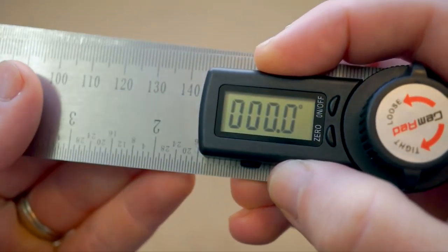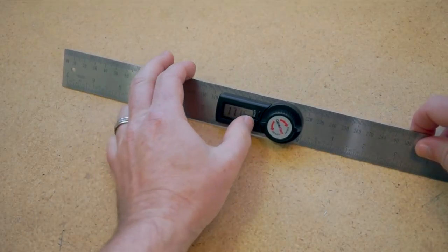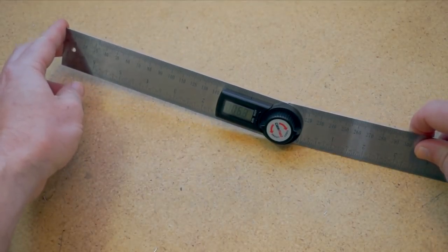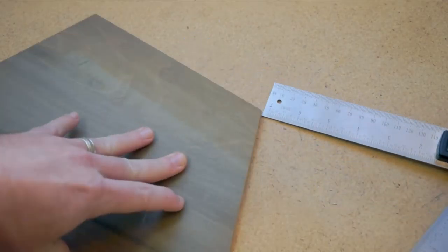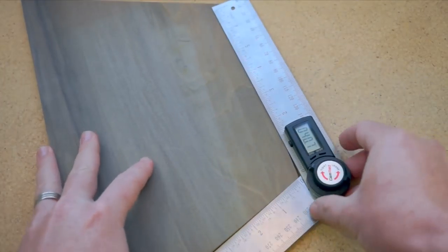It reads in either direction. You can flatten it out and zero it and measure up from here. You can compare angles by measuring one, zeroing it out, and then measuring the other to see the difference.